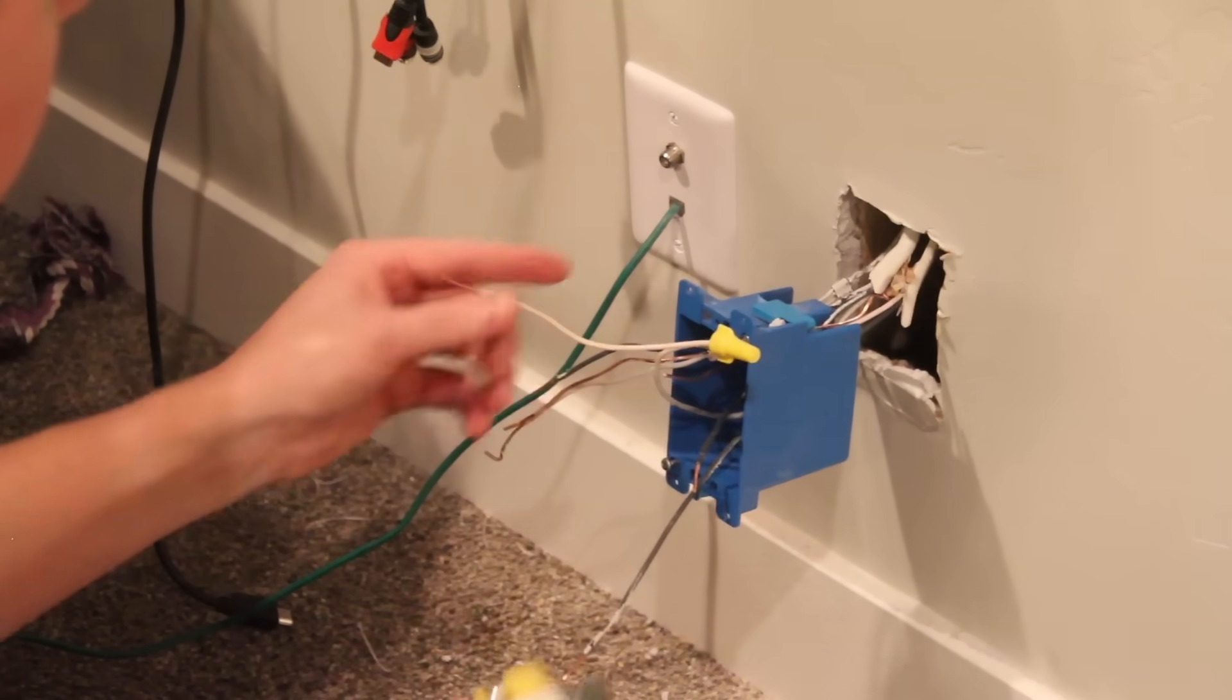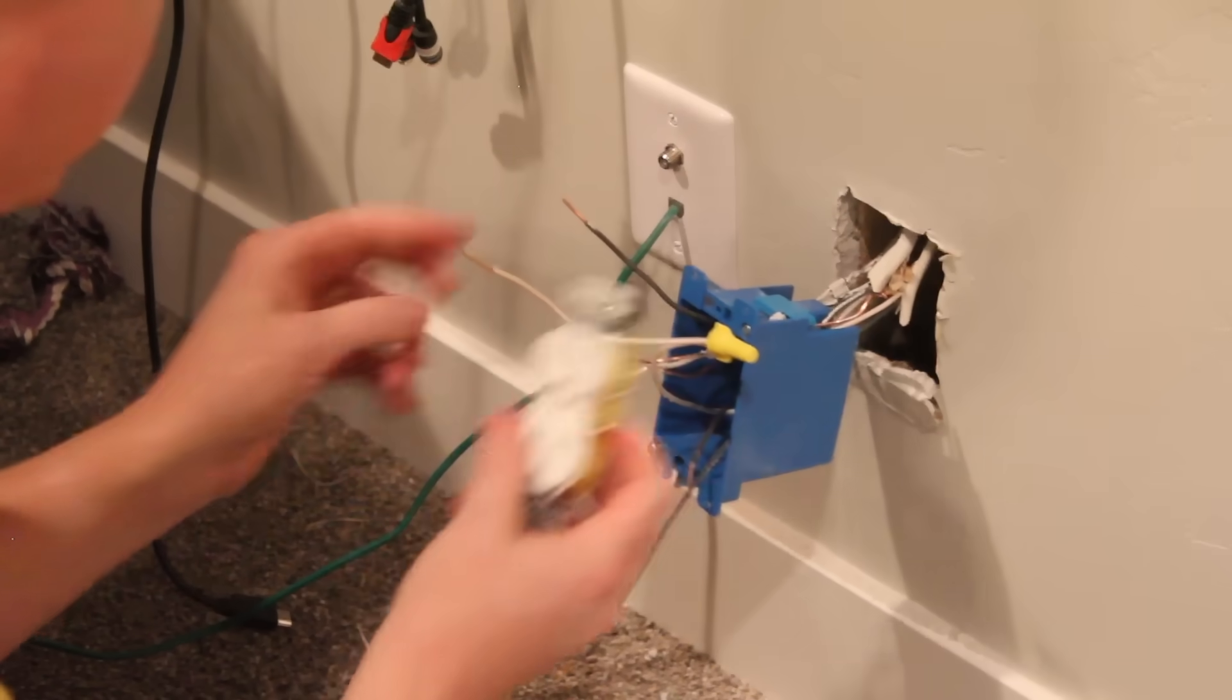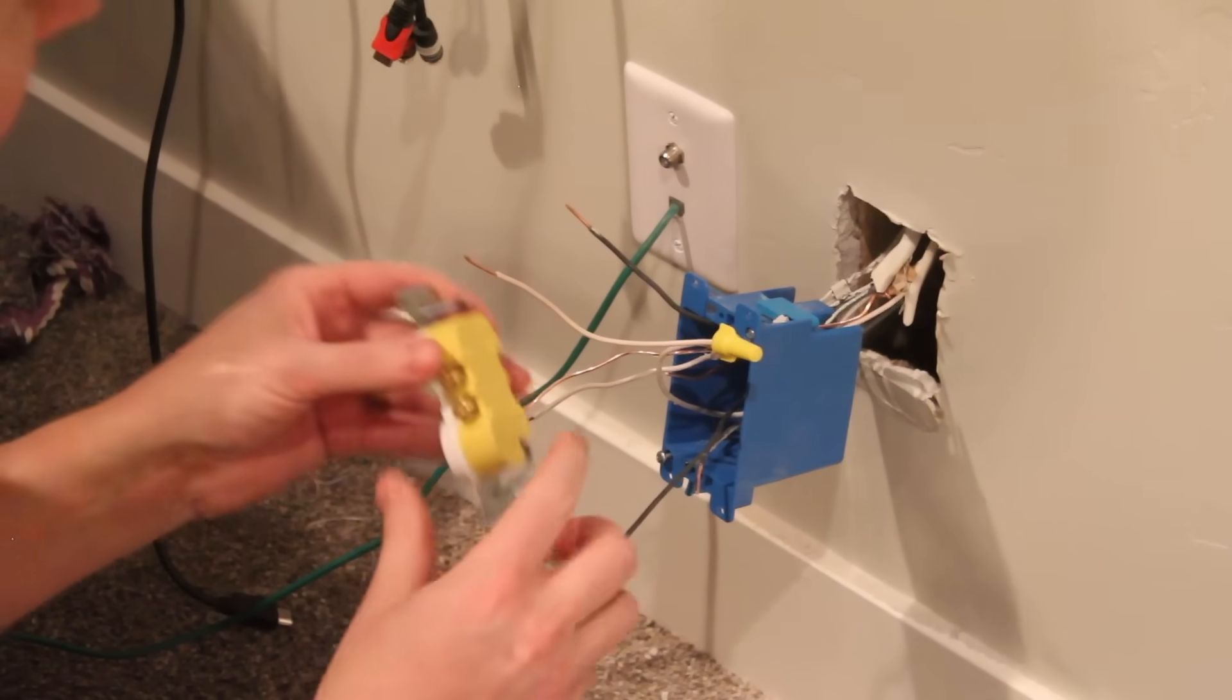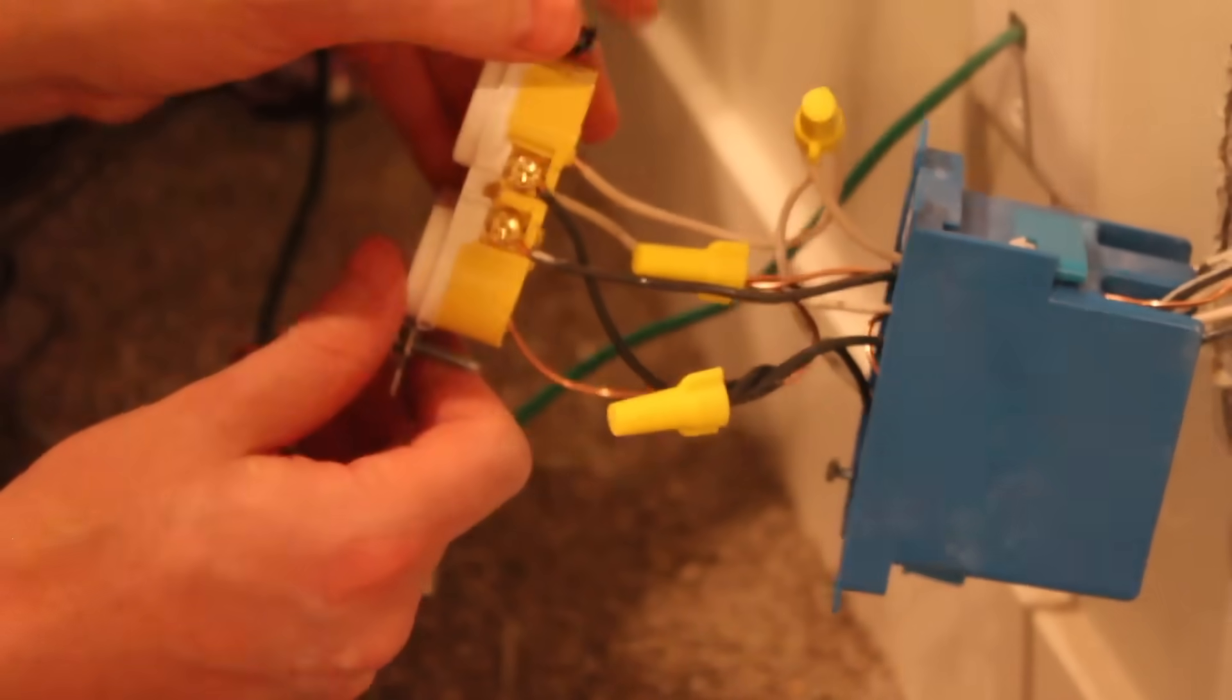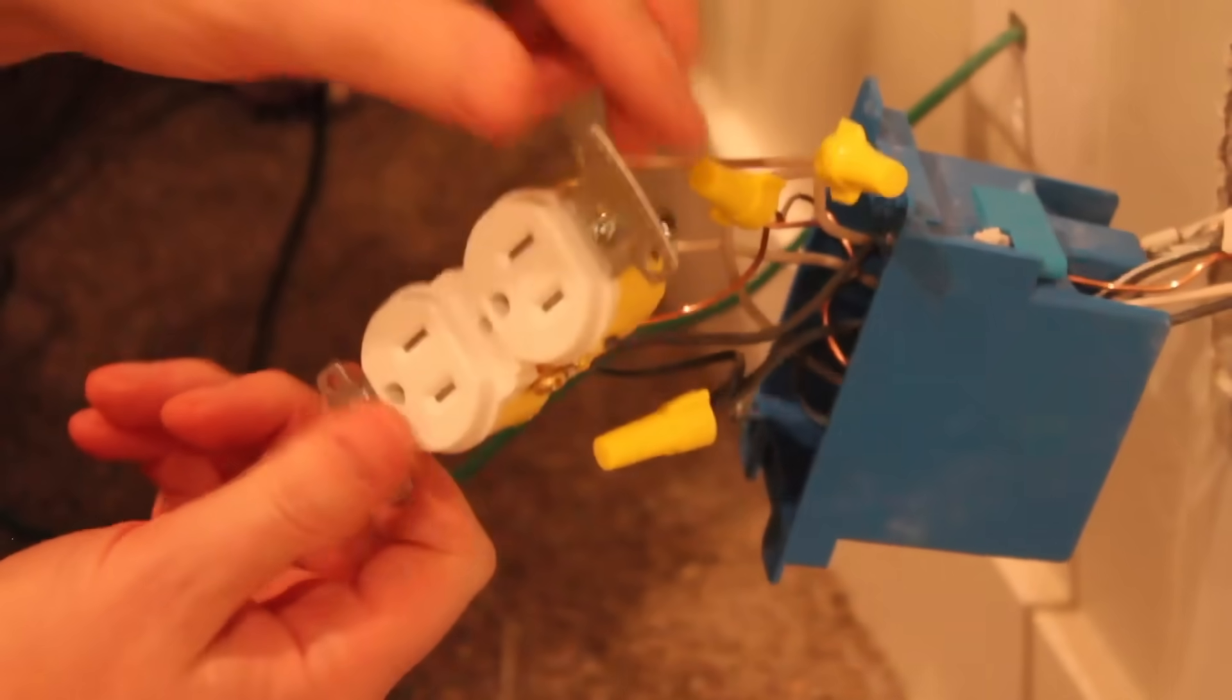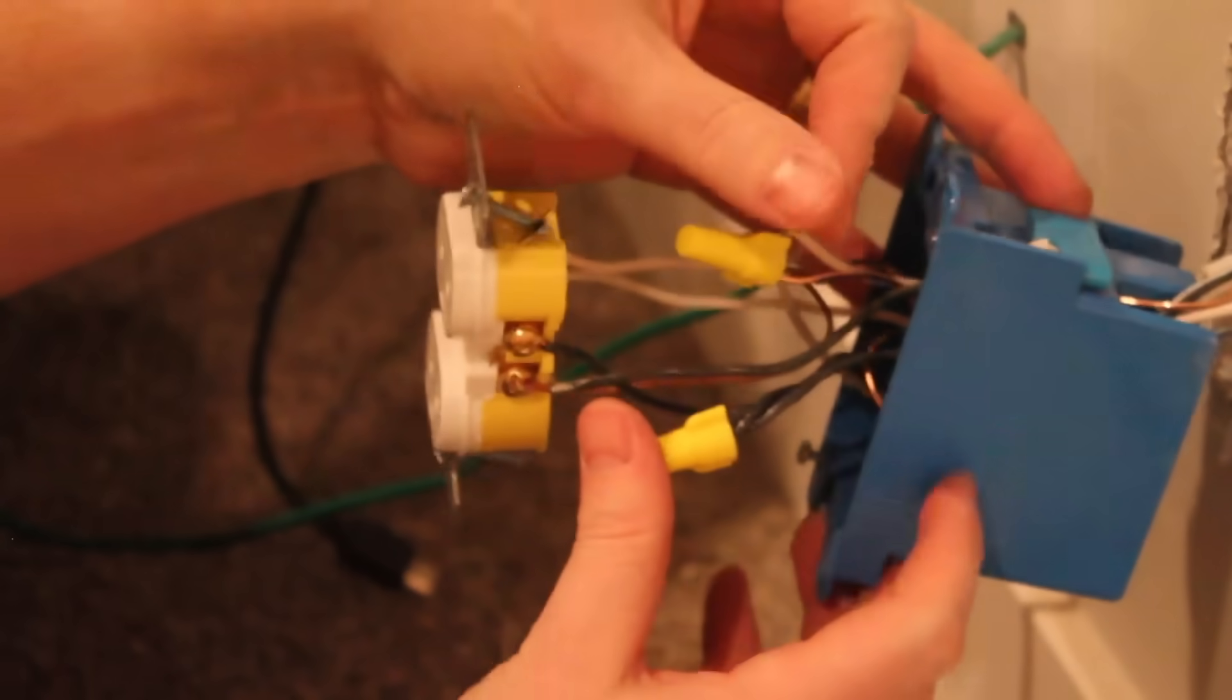And then we're going to slip a cap on and tighten it down real good to make sure that the connection is solid between all three of these. What that leaves us with is just one to put into the actual outlet itself. What you need to remember is that black goes on brass. You've got your brass side and your silver side. So black goes on brass, white goes on silver, and then your ground goes on green. Your bare ground goes on green. So we're going to wire this back up kind of like we had it before. We're just not going to use the holes in the back to do that.